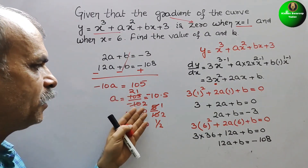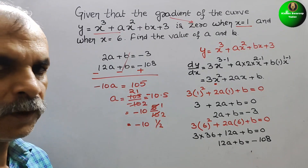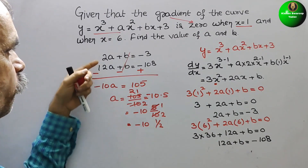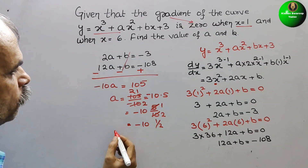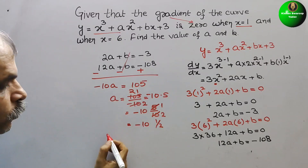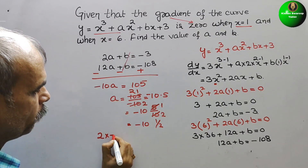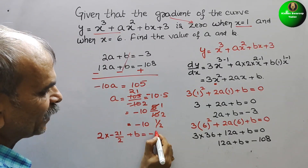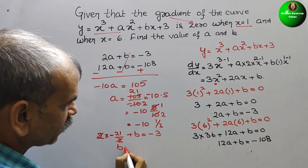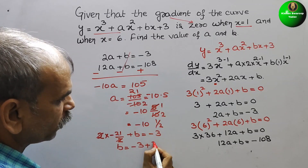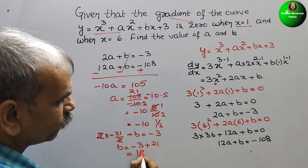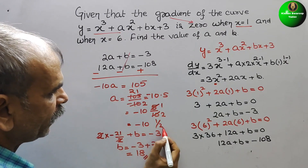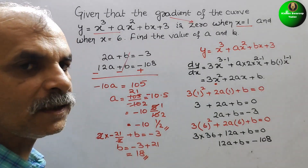Now we will find b. Substitute a equals minus 21 by 2 back into the first equation: 2 times minus 21 by 2 plus b equals minus 3. So minus 21 plus b equals minus 3, therefore b equals minus 3 plus 21, which gives b equals 18. So b is 18 and a is minus 21 by 2.